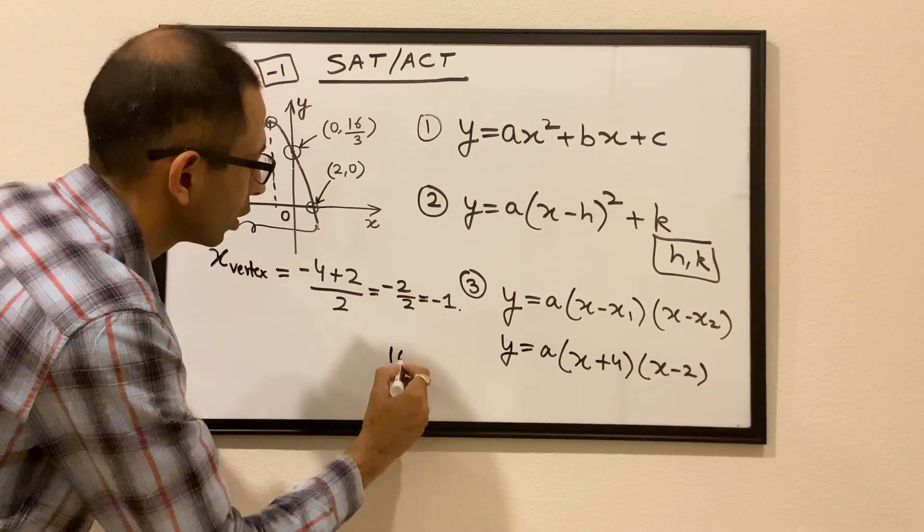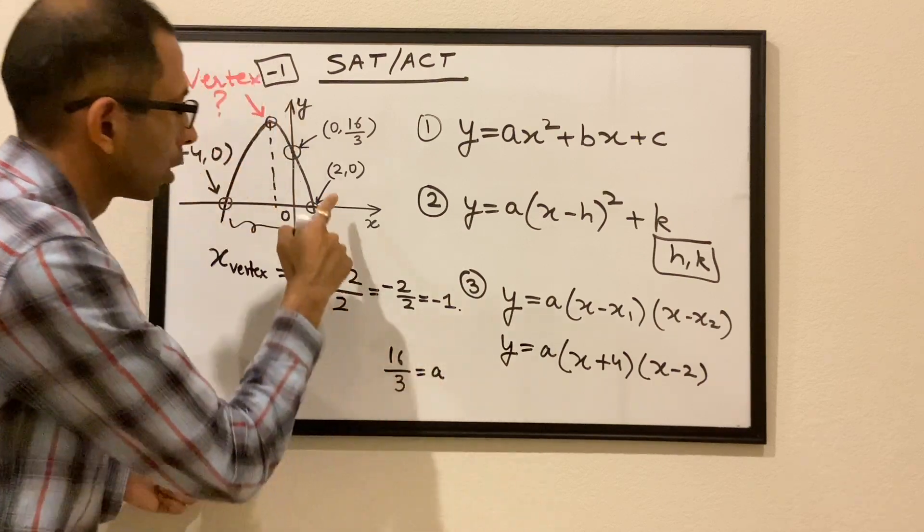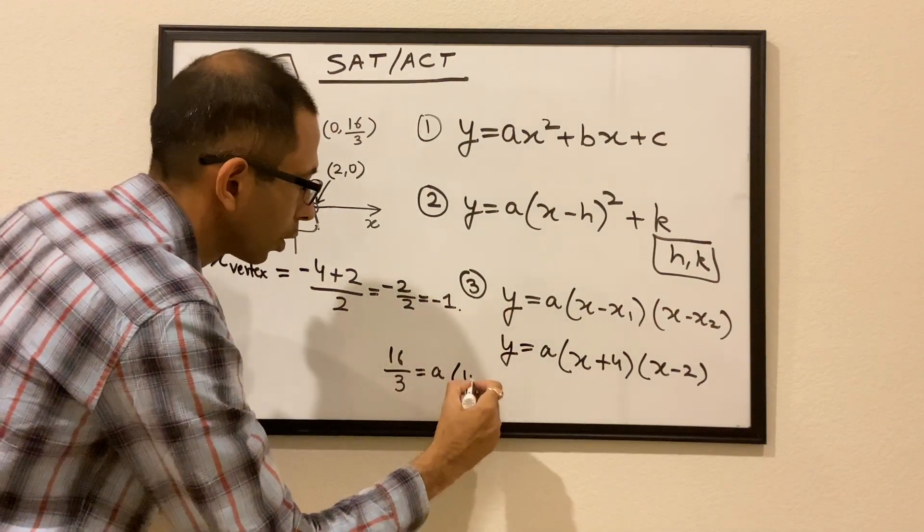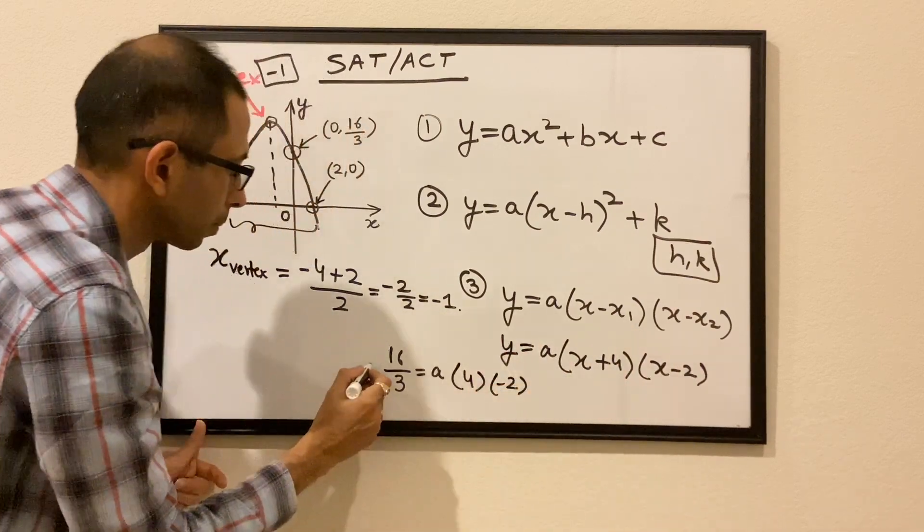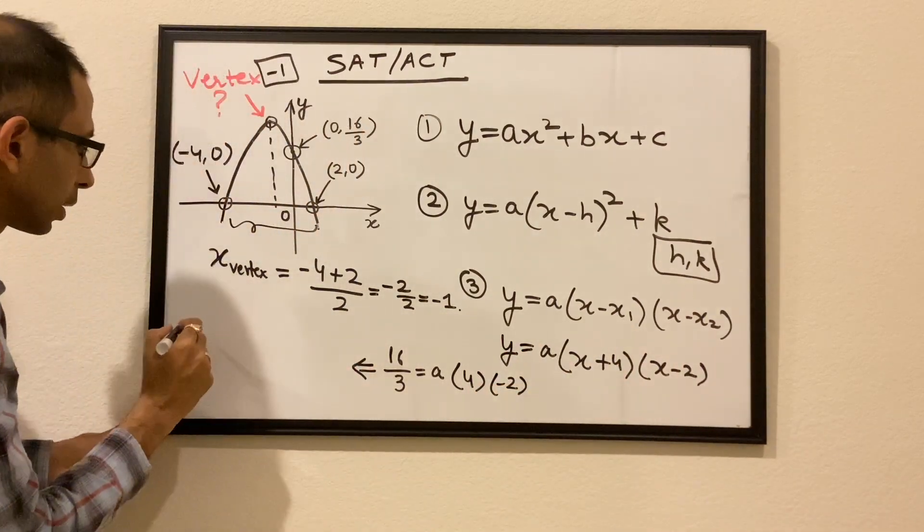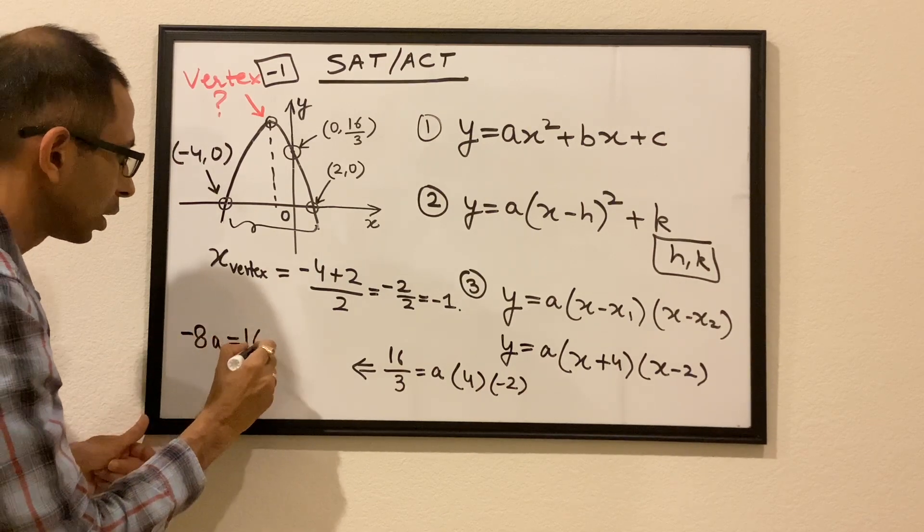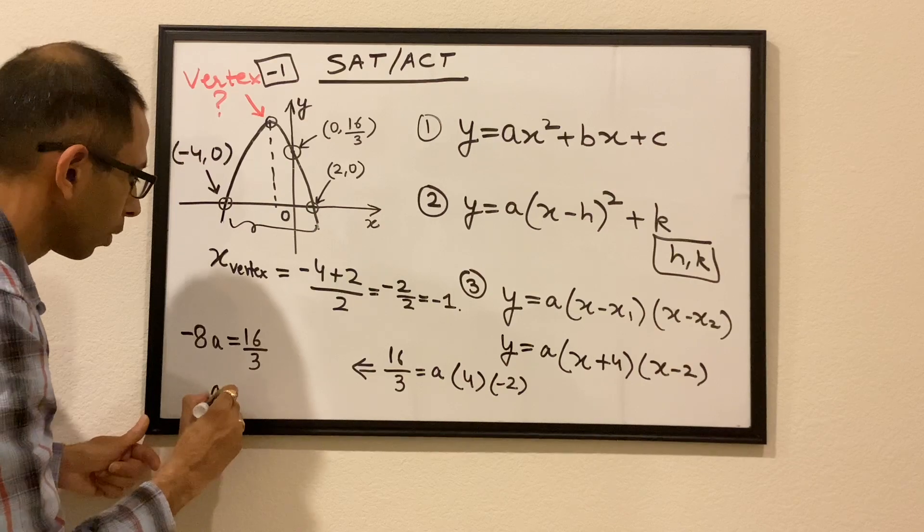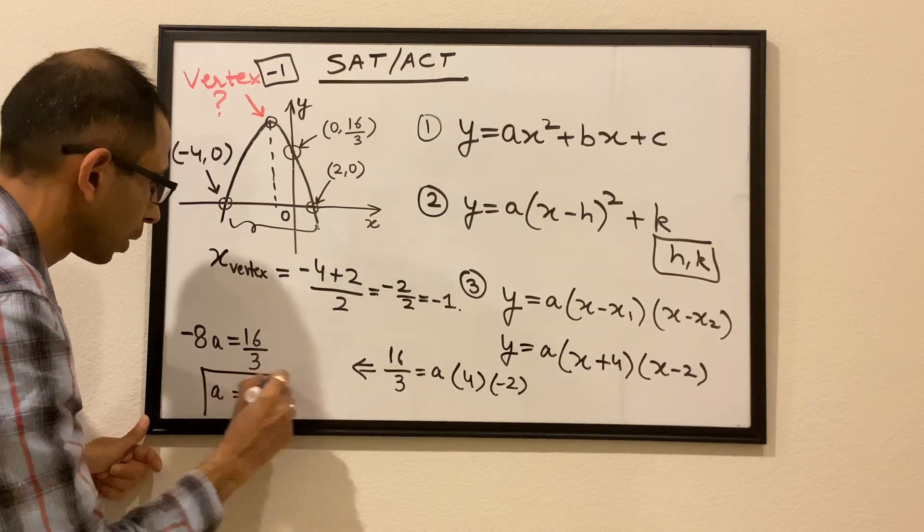So 16/3 is equal to a, and 0 plus 4 is 4, 0 minus 2 is -2. So we get -8a is equal to 16/3, or a is equal to -2/3.